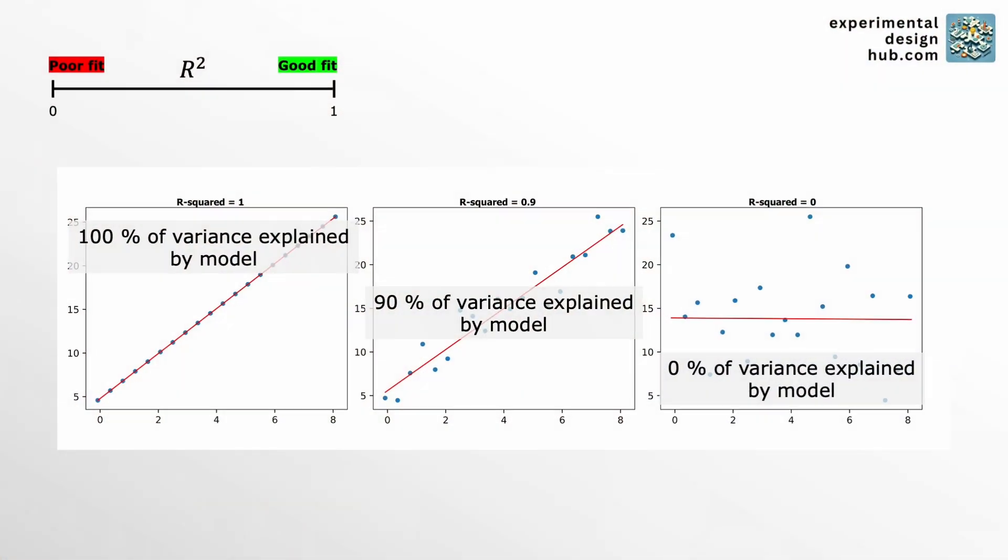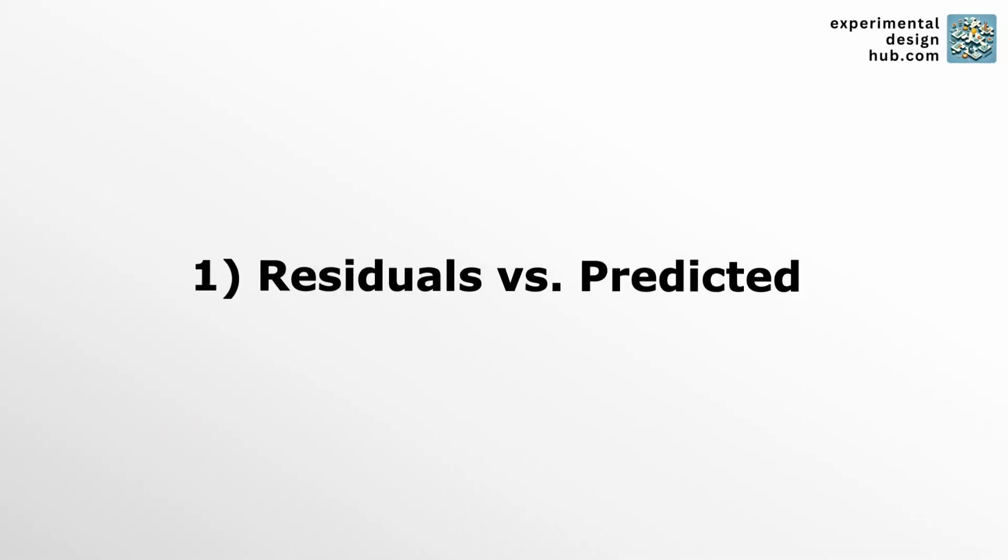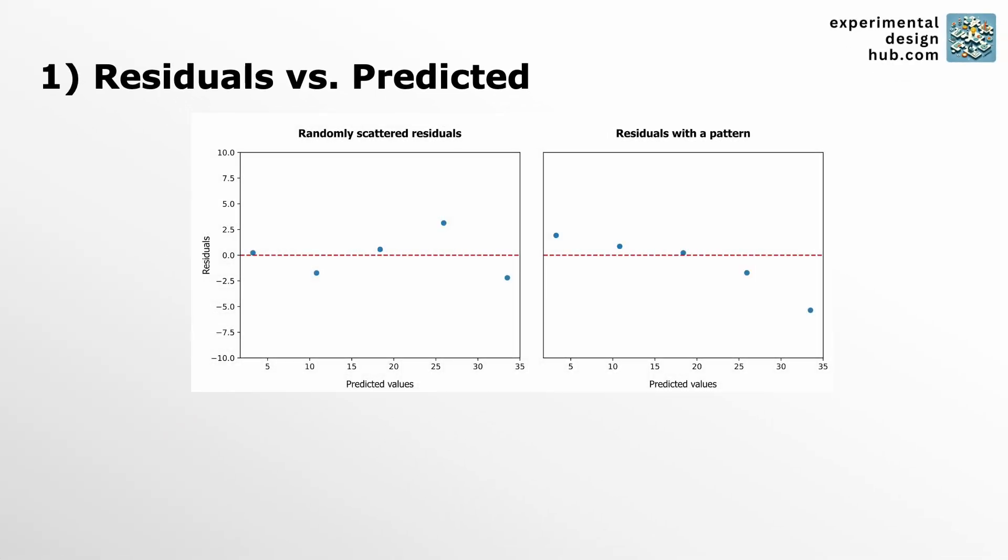But like everything in life, R squared is also not without its limitations because it doesn't tell you if your model is missing something important, like a non-linear relationship or maybe a time-dependent effect. And that's where residual plots come in. Basically, there are two important ones: residuals versus predicted and residuals versus run.